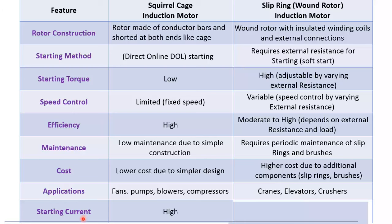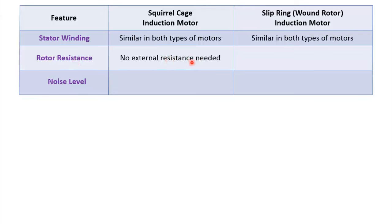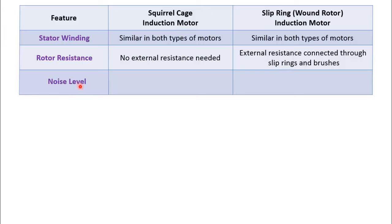Starting current of squirrel cage motor is high as compared to slip ring motor due to soft start capability. Stator winding in both motors is same. In squirrel cage motor, no external resistance can be connected with rotor, whereas in slip ring motor, external resistance with rotor is required for starting torque and speed control.